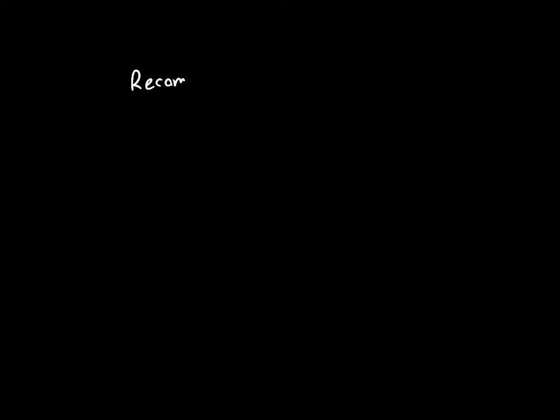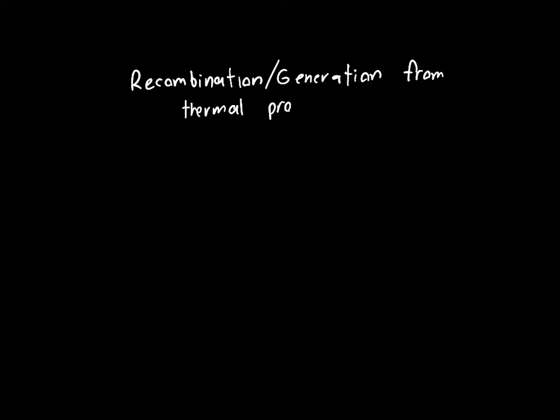In the last video, we talked about generation from light. In this video, I'm going to talk about recombination and generation from thermal processes. Specifically, we're going to take a look at just the indirect process — the RG center, or indirect thermal recombination.